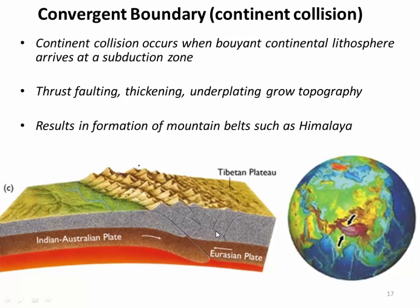Another type of convergent boundary is a continent-continent collision. This occurs when essentially a piece of continental lithosphere arrives at a subduction zone and slams into a continent on the other side. Rather than just going down the subduction zone like oceanic lithosphere might, when a thicker, more buoyant continent arrives, it collides and all hell breaks loose. We get thrust faulting, thickening, underplating. Basically, the crust deforms just like a car accident. And we start to build large mountain ranges, such as the Himalaya, which were built when India collided northward with Eurasia. Now we have this huge 3,000-mile-long belt of mountains, almost as big as the United States.